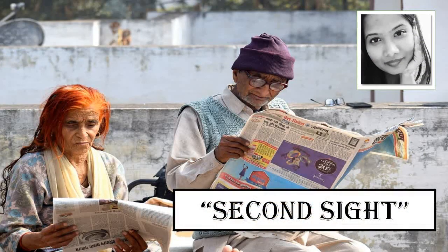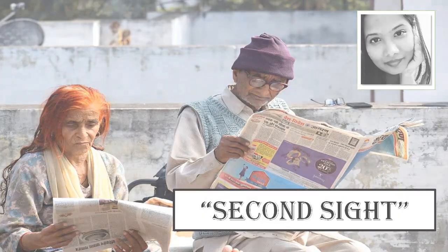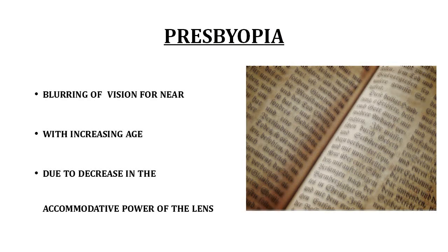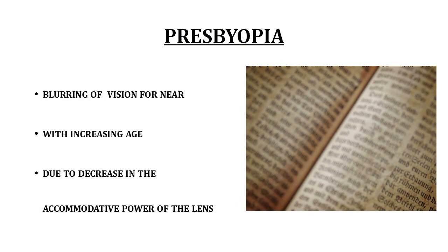To understand second sight, we need to first understand presbyopia. Presbyopia is defined as blurring of vision for near that occurs with increasing age due to decrease in the accommodative power of the natural lens.